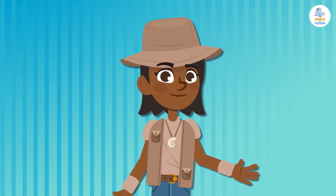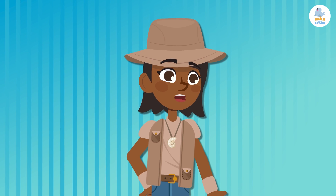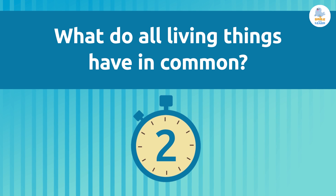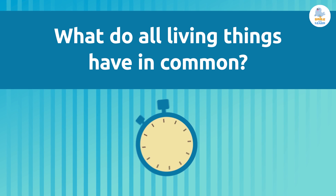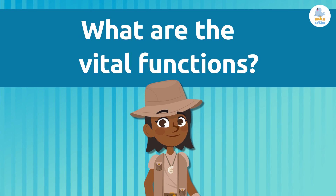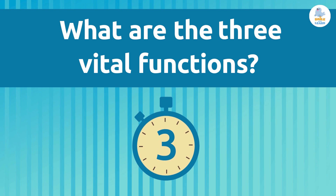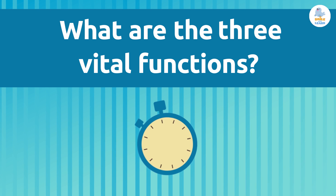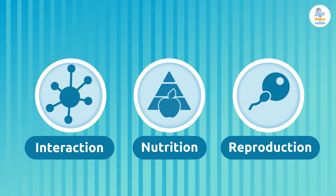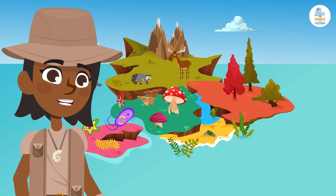Smile and Learn! Hello everyone, today we're going to learn how we classify living things. First, let's start with a question: do you remember what all living things have in common? The answer is that they all fulfill the vital functions. Do you remember what the vital functions are? Here's a hint — there are three. The vital functions of living things are interaction, nutrition, and reproduction.